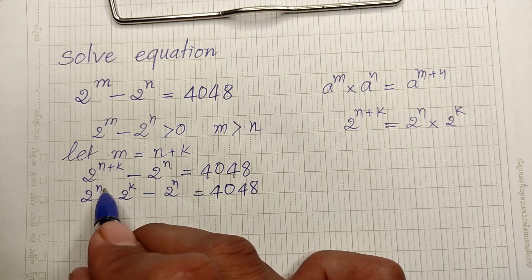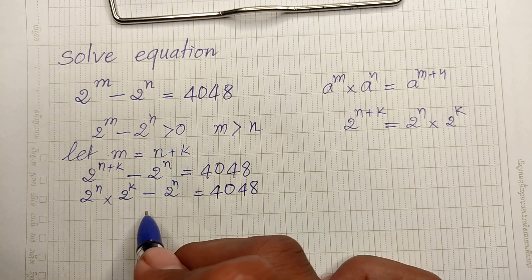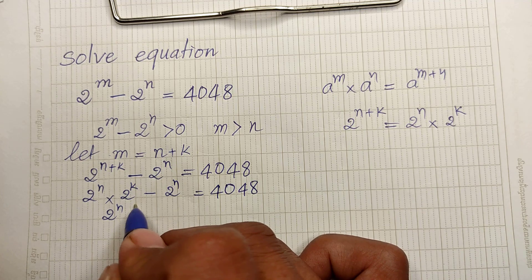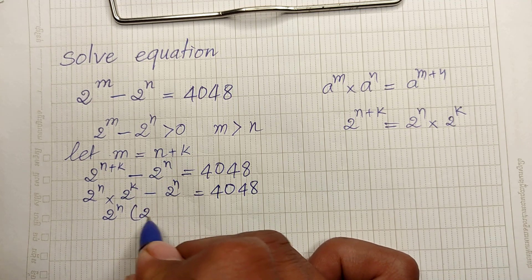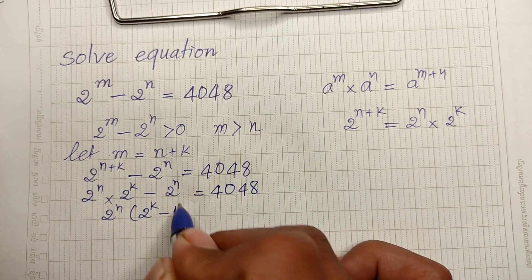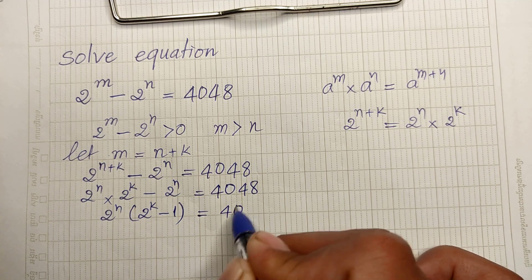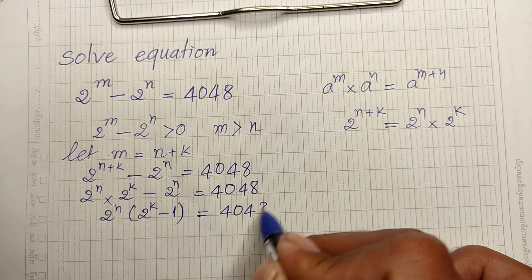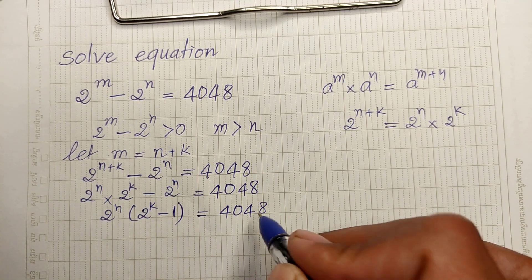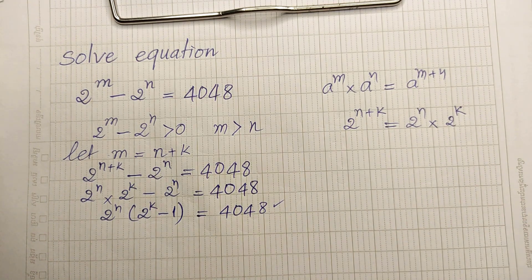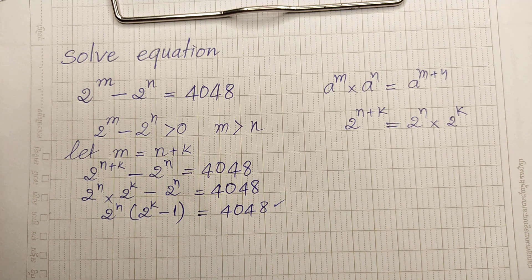We can take 2 to the power n as a common factor, so we get 2 power n multiplied by (2 power k minus 1) equals 4048. Now we must write 4048 in its prime factors.